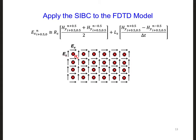Shown at the top of the slide is the approximation for EX at the surface of the ground that we just developed. We end up using these EXs along the bottom of the grid when we update the HYs that are one half of a cell above the EXs.